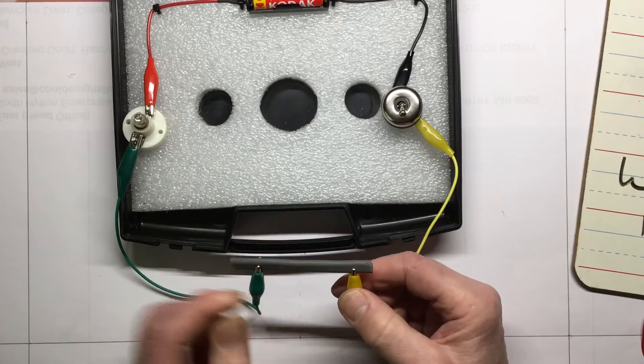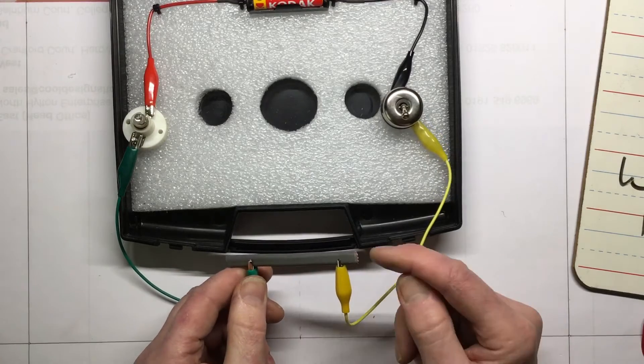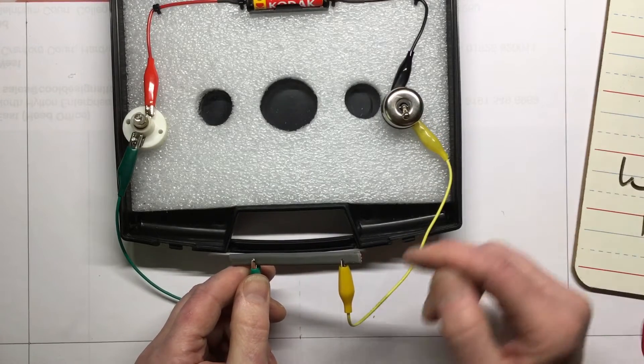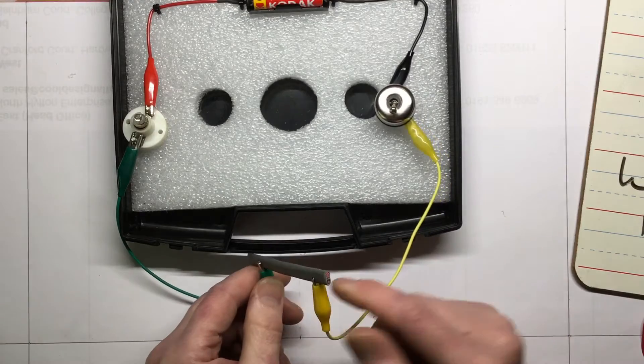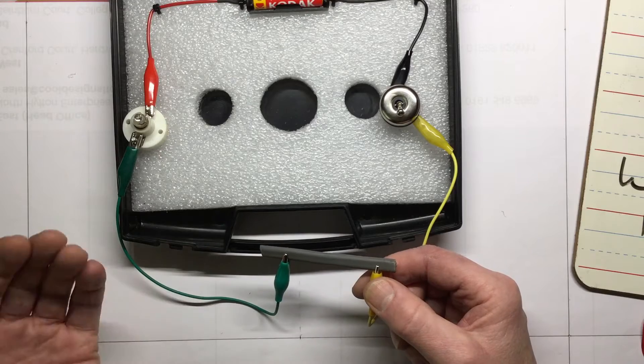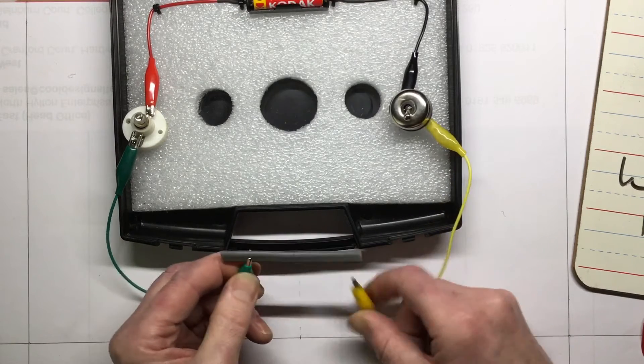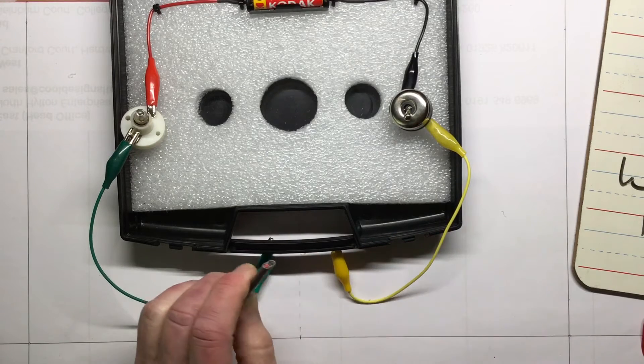One which is the insulator on the outside for protection and to stop the metal inside touching things it shouldn't, and then the metal itself which conducts the electricity and allows us to use it in electrical circuits to turn appliances on and off like our light bulbs. So let's take a pair of pliers and take this a little bit further.